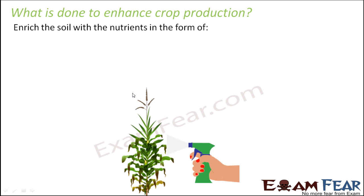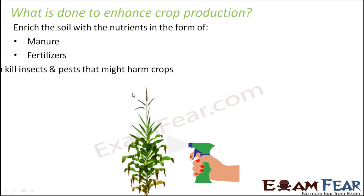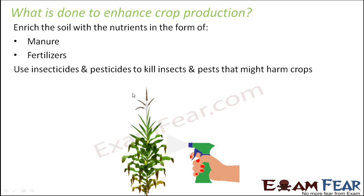To enhance crop production, we enrich the soil with nutrients in the form of manure and fertilizers, and we also use insecticides and pesticides to kill insects and pests that might harm crops. We want to destroy all of them which hamper plant growth — for example, insects and pests might eat up plants. We kill insects and pests by putting insecticides and pesticides. Manures and fertilizers increase the nutrient content of the soil.